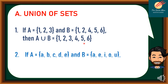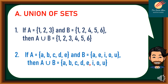Another example: if A is equal to {A, B, C, D, E} and B is composed of {A, E, I, O, U}. Therefore, A union B is composed of A, B, C, D, E. Notice that A and E appear in set B — I will no longer repeat the same elements. So I proceed to I, O, U. Therefore, this is A union B.